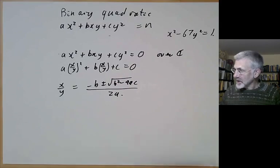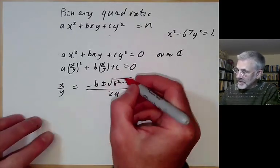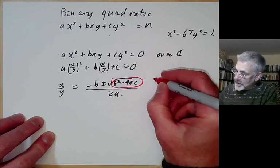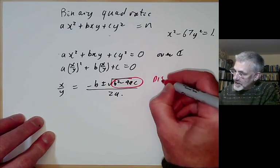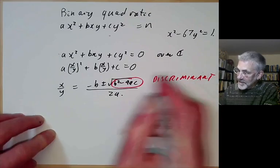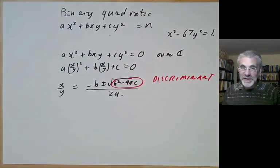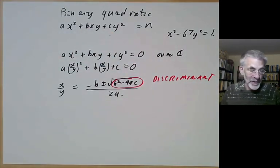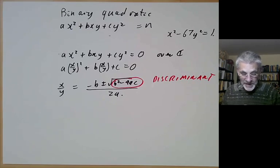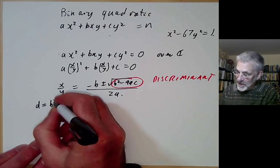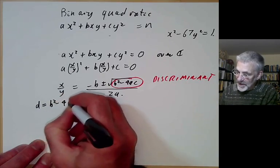The term b squared minus 4ac is called the discriminant. It very much determines the behavior of this form, not only over the complex numbers but also over the integers. We normally denote it by d, so d equals b squared minus 4ac.